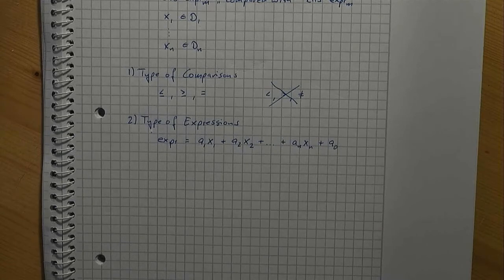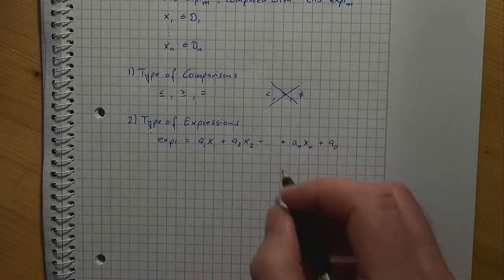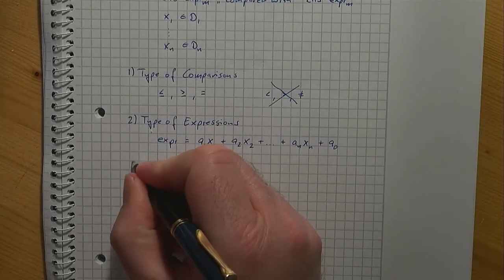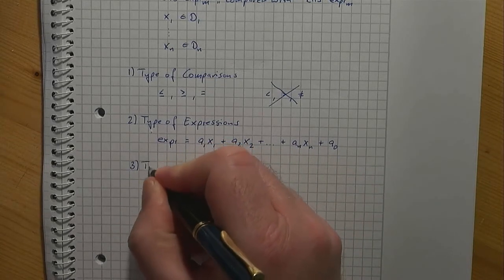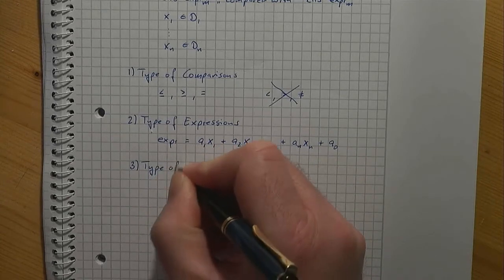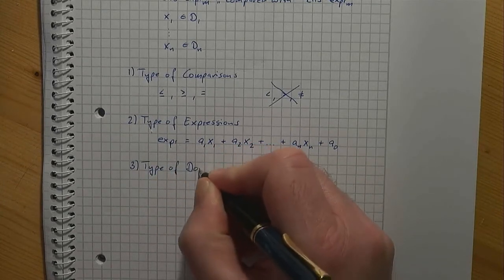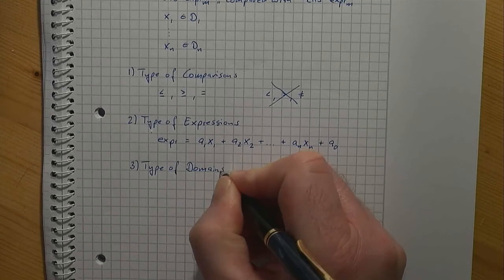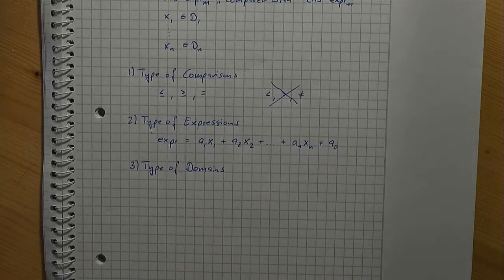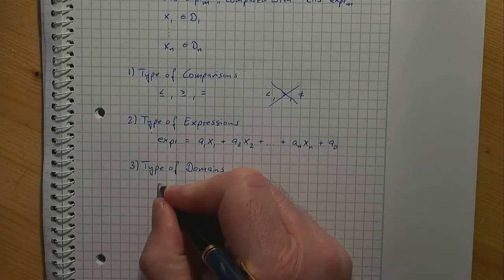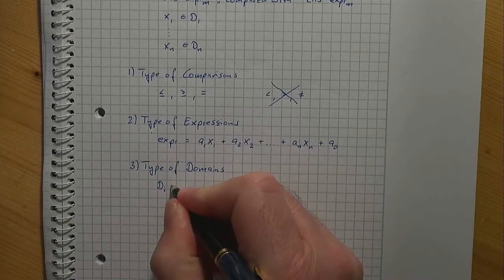And finally, what are the domains we are allowed to have? The domains di we are interested in are either closed intervals. That is, di equals...